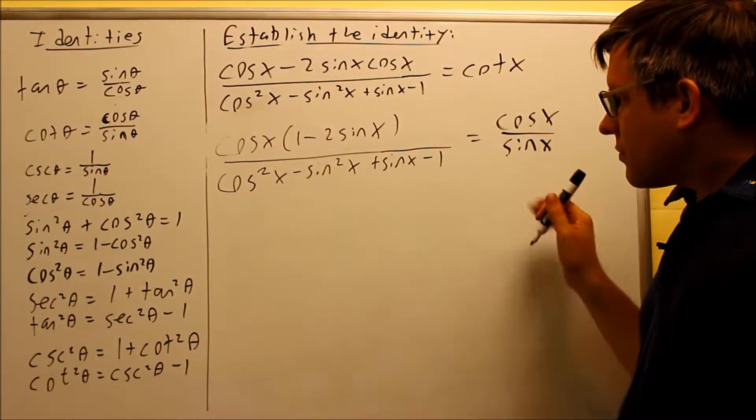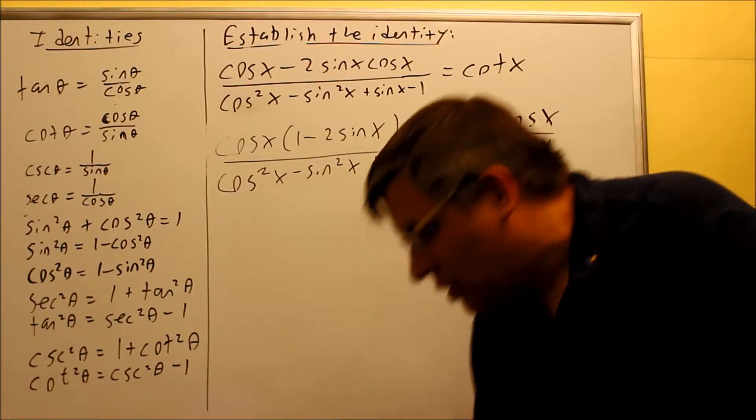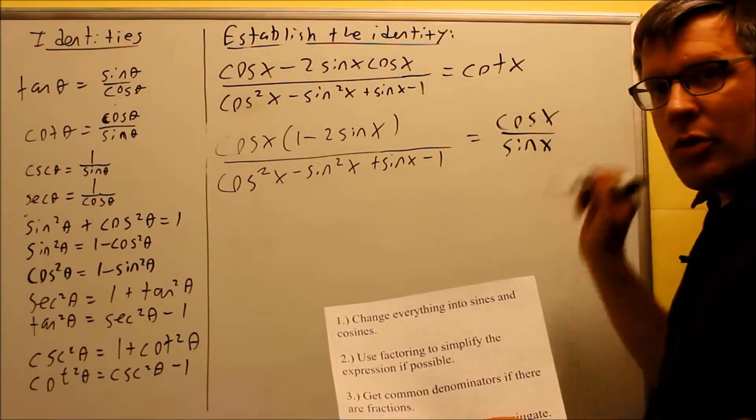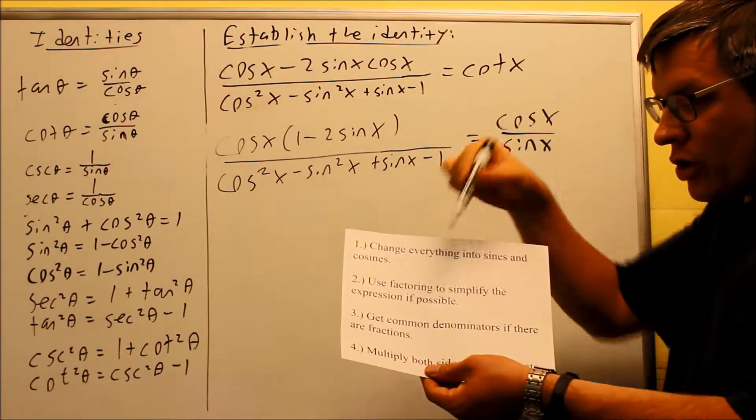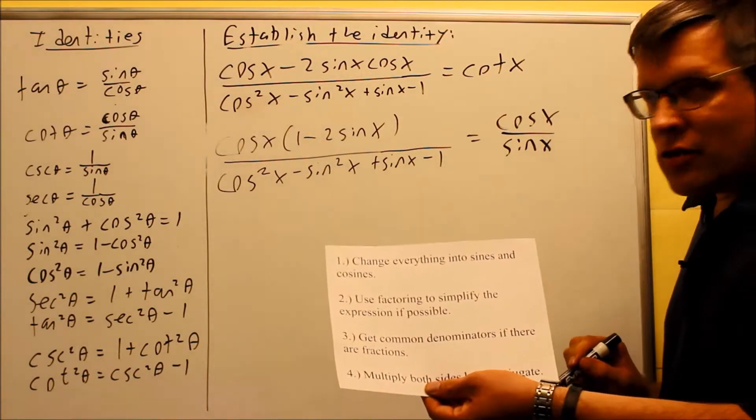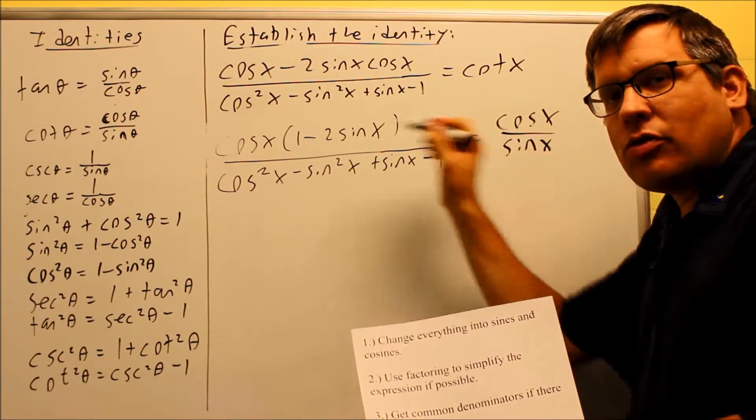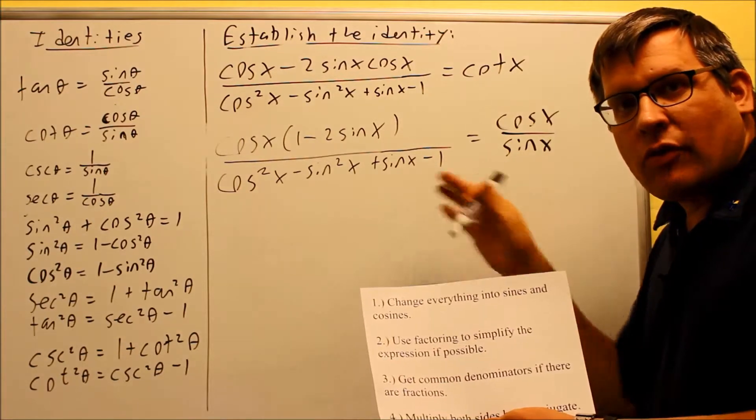Now that I have this point, I need to see what else I can do for my techniques. So here's my techniques again. Change everything to sines and cosines. Done. We did it. Use factoring. We did. Three. Get common denominators if there's fractions. Well, normally, if you have two fractions together, then you would do common denominators to combine those both together. We don't have that in this case. We only have one fraction.